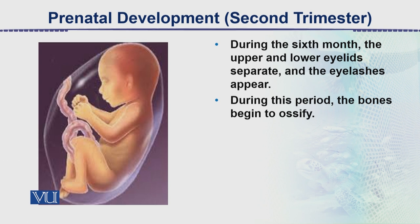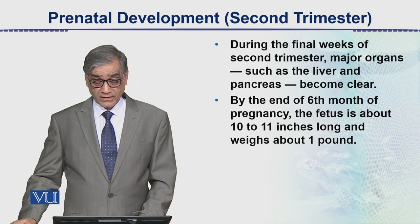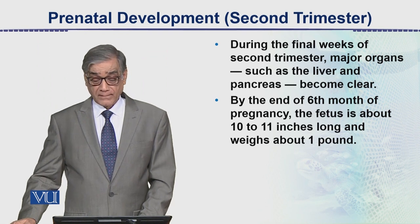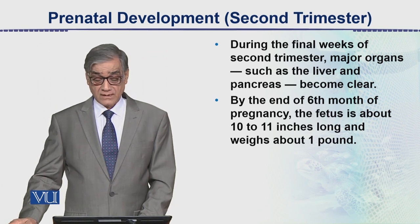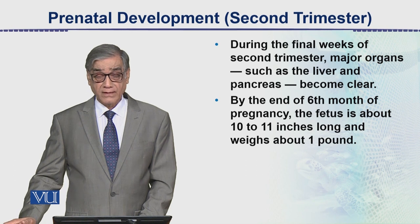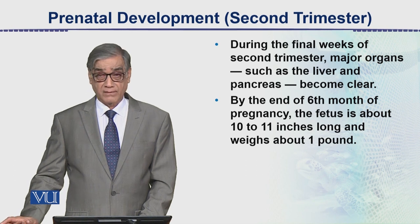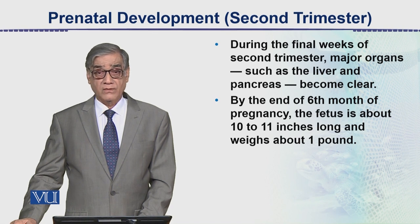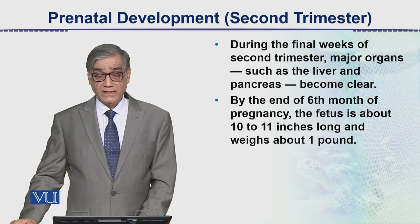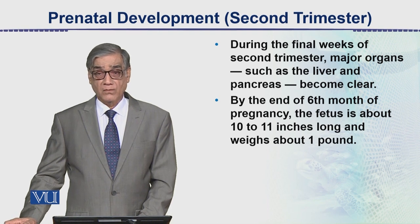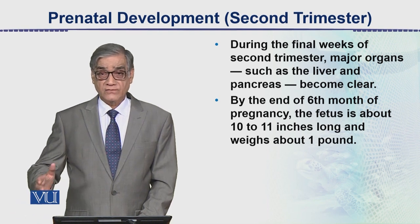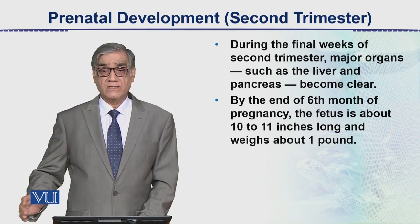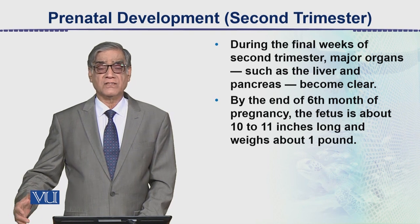During the final weeks of the second trimester, major organs such as the liver and pancreas also become functional. By the end of the 6th month of pregnancy, the fetus is about 10 to 11 inches long and weighs about one pound.